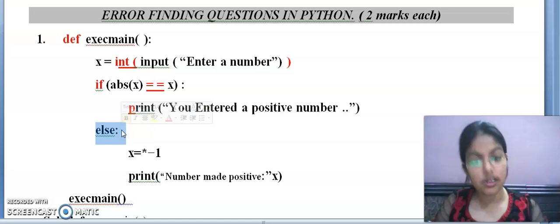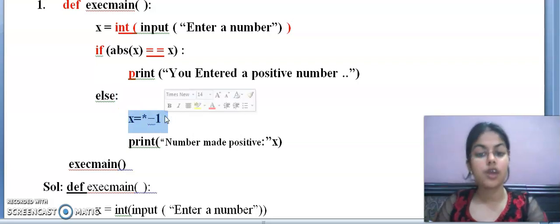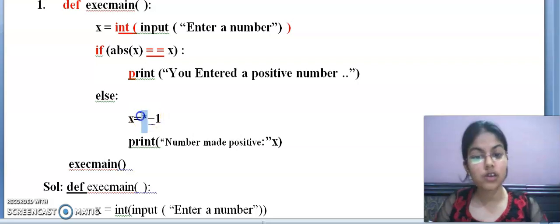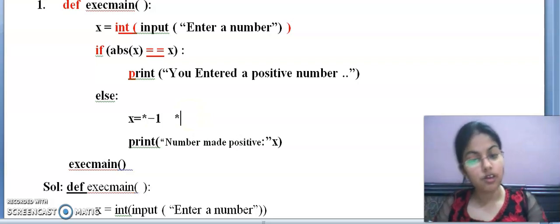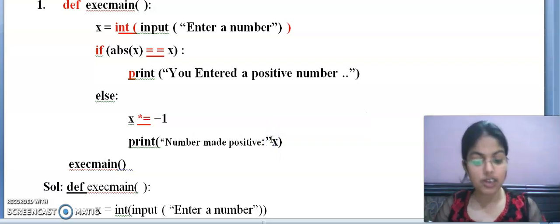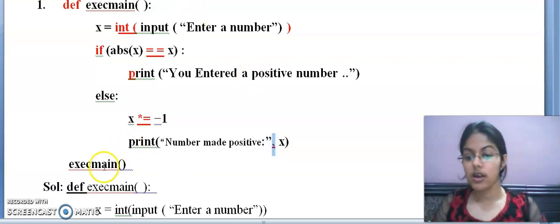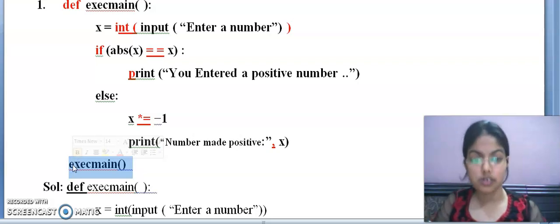Moving to the next statement, else block. This is correct. Colon is also given. In the next statement, x equals to into minus one. This is a shorthand assignment operator. The syntax is operator first, then equals to. But here the reverse is given. So you will modify this into *= and there's no space between them. Print number made positive and x. We need to print the value, so after this we have to write a comma also. This is the function call statement, and this is correct.